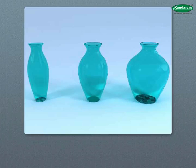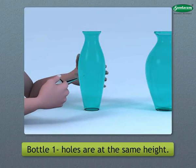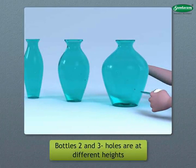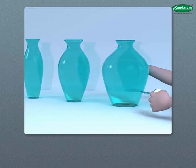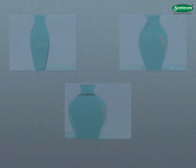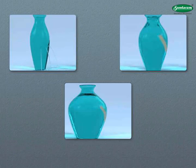Activity: Take three plastic bottles of different sizes and diameters, and mark them as one, two, and three. On bottle one, mark three holes at the same height. On bottles two and three, make three holes at different heights. Close all the holes with tape, fill the bottles with water, then remove the tape from bottle one and observe the flow of water from the holes.